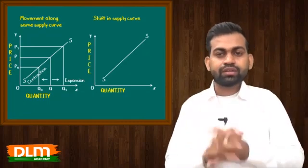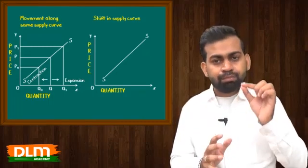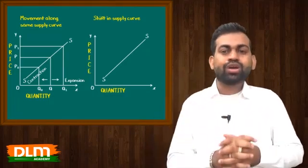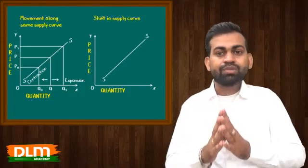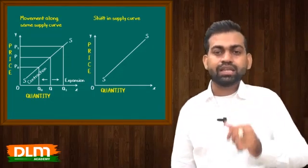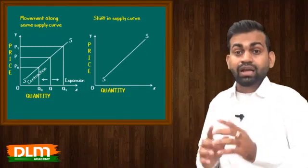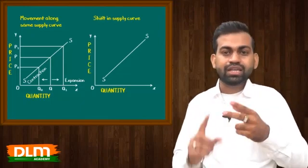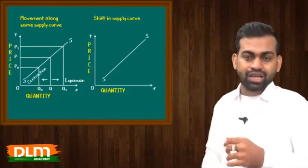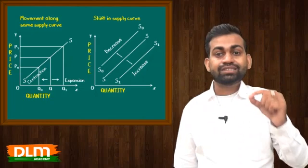Agar price constant rahe aur dusre factors change ho jayein — jaise technology mein improvement aa gaya — to chahe price P ho, P1 ho, P0 ho, kuch bhi ho, supplier zyada supply karne ko ready hoga. Agar cost of production kam ho gayi to har possible price pe supplier pehle ke muqable zyada supply karne ko ready hoga. Agar government policy easy ho, government subsidy de rahi hai, to pehle ke muqable har possible price pe zyada supply karna chahenge. Yani subsidies milti hai, technology mein improvement hota hai, cost of production kam ho jata hai — to poora supply curve hi rightward shift ho jayega, jise hum kehte hain increase in supply. Agar iska ulta hua to supply curve leftward shift ho jayega, jise hum kehte hain decrease in supply.